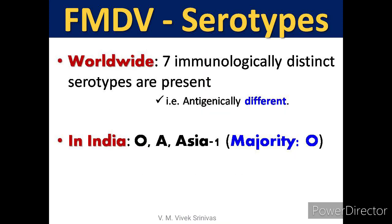Among the 7 serotypes, in India only FMD serotypes O, A, and Asia 1 are prevalent. Among these three, FMD serotype O is predominantly circulating, accounting for approximately 90% of cases in India.